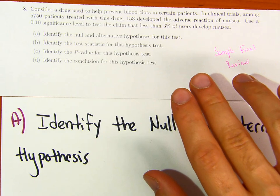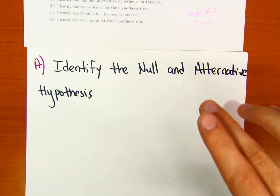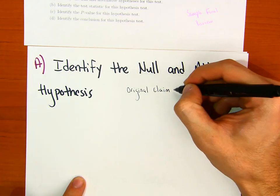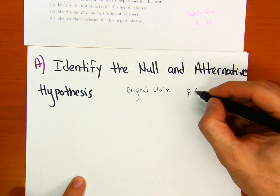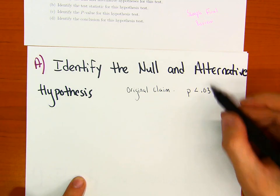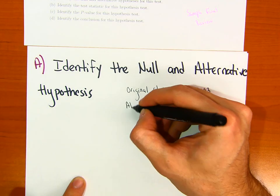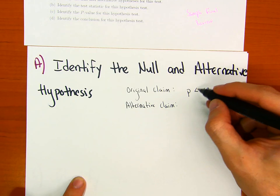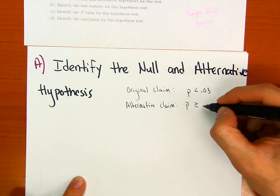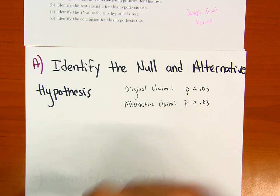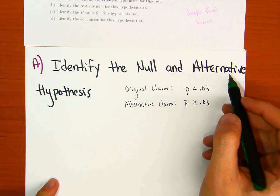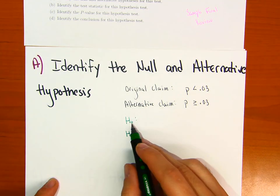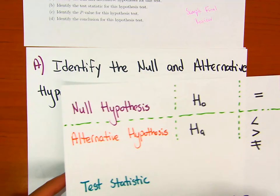Anytime you approach this type of question, focus on a few key things. First: what is the original claim? The original claim is that p is less than 0.03, because 0.03 represents that 3%. The alternative claim is the opposite of less than, so p must be greater than or equal to 0.03. When choosing the null and alternative hypothesis, remember: H-naught represents the null and H-sub-a represents the alternative.